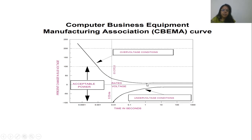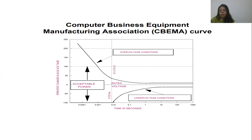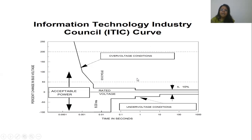These boundaries tell us: larger magnitudes the equipment can withstand only for a shorter time; smaller magnitudes it can withstand for a longer time. Above the upper boundary is an over voltage condition; below the lower boundary is an under voltage condition (sag or swell for short durations). The ITIC curve is similar but uses straight lines instead of curves. Anything within the boundary is acceptable; anything outside is non-acceptable.